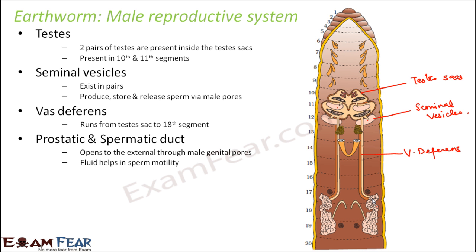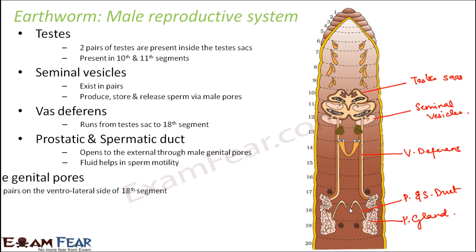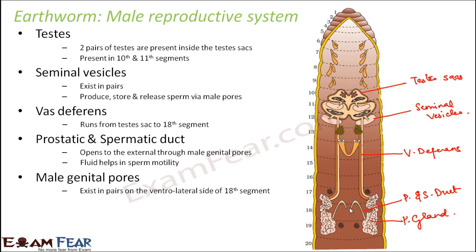The prostatic and spermatic duct opens to the exterior through the male genital pores, and the fluid present here helps in sperm motility. You can see some tube-like structure here — where it ends is the male pore, through which sperms are released outside. The male genital pores also exist in pairs on the ventrolateral side of the 18th segment — sideways towards the belly side, but not at the mid-center.